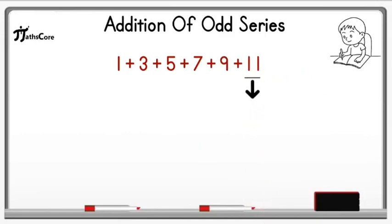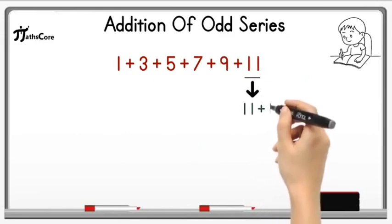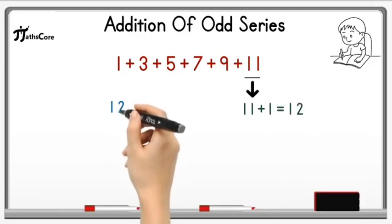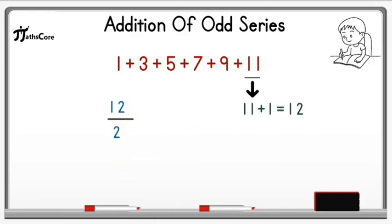Take this 11 in the next step and add 1 in it. So 11 plus 1 is equal to 12. Now we have to divide this 12 by 2. So 12 divided by 2 is equal to 6.